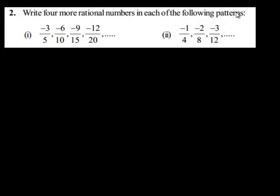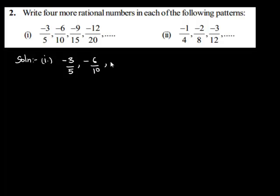The problem says: write 4 more rational numbers in each of the following patterns. The first problem is: negative 3 upon 5, negative 6 upon 10, negative 9 upon 15, negative 12 upon 20, and so on.